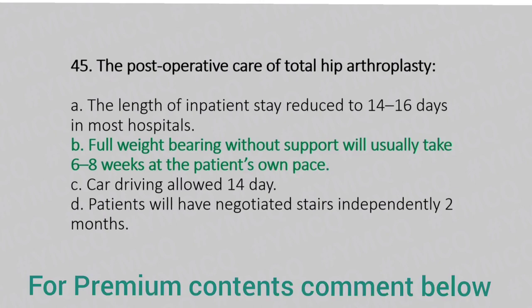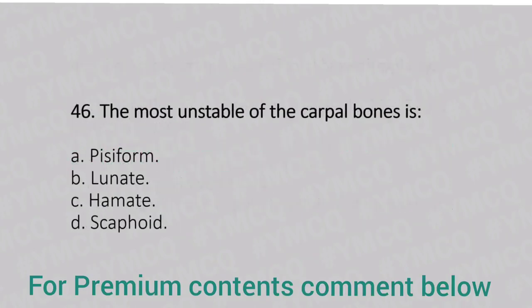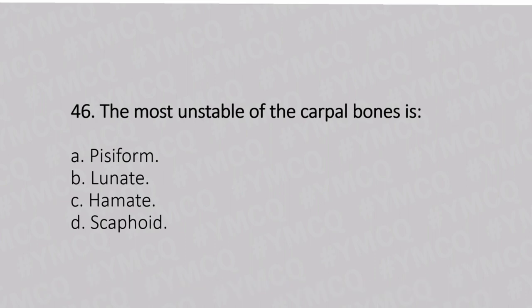Now let's move to question number 46. The most unstable of the carpal bones is. Option A: pisiform. Option B: lunate. Option C: hamate. Option D: scaphoid. And the answer is Option D, scaphoid.